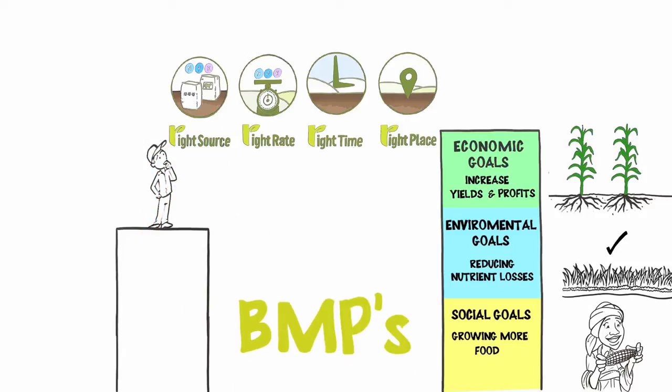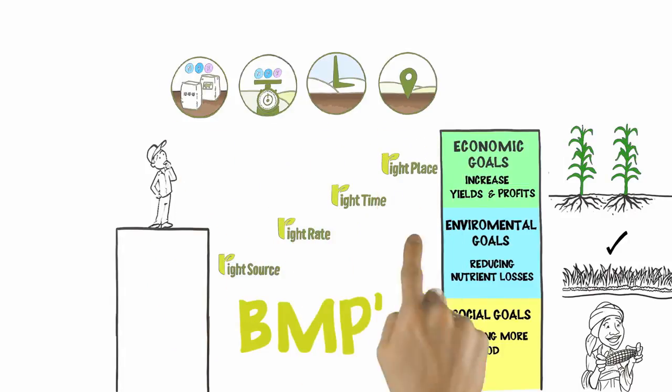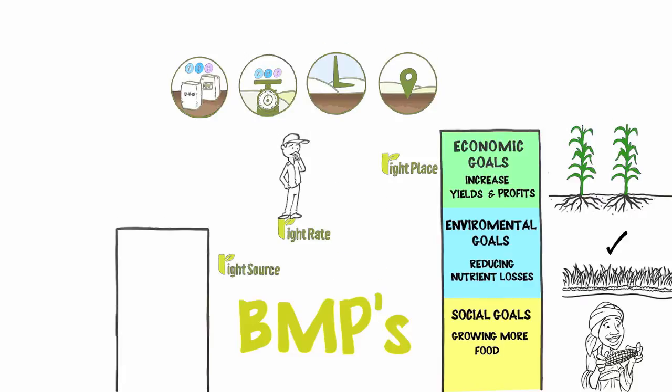BMPs enable growers to make the right decisions about nutrient source, rate, time and place. All 4Rs need to be addressed together to ensure nutrients react with the soil and plants in a way that achieves optimum crop uptake and reduces nutrient losses.